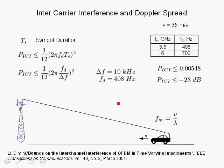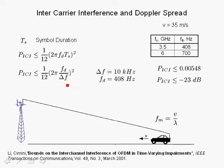Due to Doppler shift and the Doppler power spectral density, we have intercarrier interference, and this expression shows the upper bound on that interference — refer to the paper for the derivation. This result shows that the power of intercarrier interference increases with the Doppler shift, which makes sense: the faster the vehicle, the more intercarrier interference. It is also proportional to the square of the symbol time Ts, where Ts is related to the inverse of the carrier spacing. Replacing Ts by 1 over ΔF, we get that if we increase carrier spacing, we dramatically decrease the intercarrier interference due to Doppler shift.